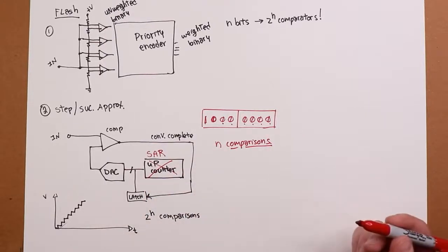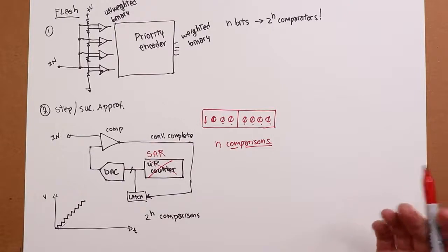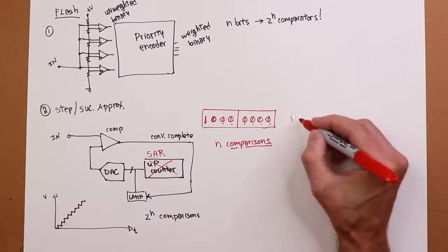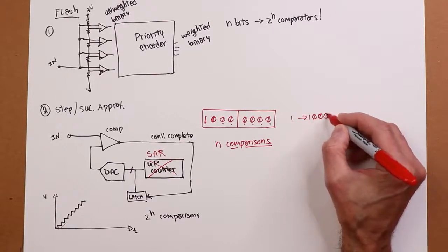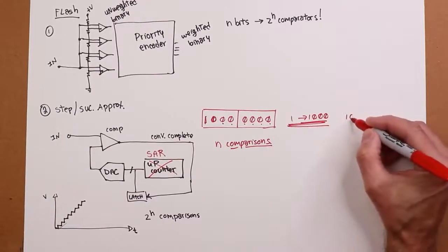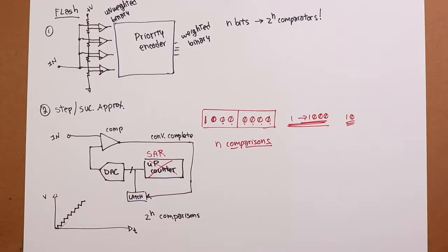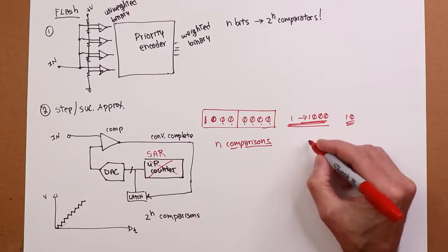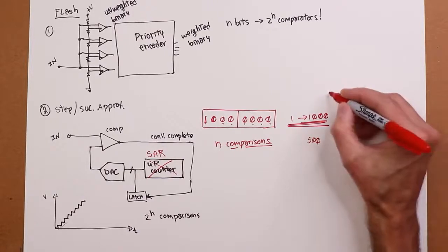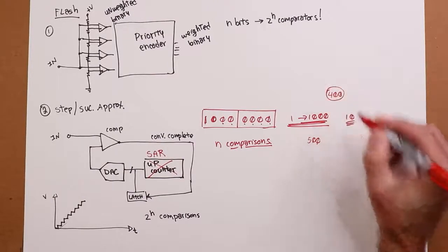This is kind of like a little parlor trick you can do, which is you can tell someone, hey, think of a number from 1 to 1,000. Don't tell me the number. I'll bet you I can guess this number in 10 guesses. All you have to do is tell me whether my guess, each guess, is higher or lower than your actual value. So your first guess is going to be 500.